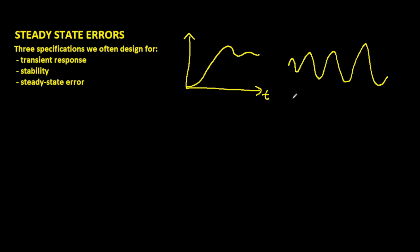The third specification we often are interested in is steady-state error. With steady-state error, we are trying to find out when the system does settle. To study steady-state error, we have to assume stability. If there is no stability, there is no issue of steady-state error, because if your output is growing with time, it does not settle to any specific value. Once it has settled to a certain value, then we can determine what the steady-state error is.